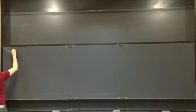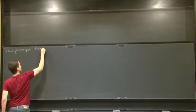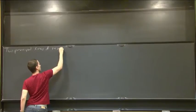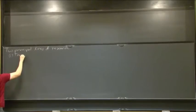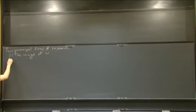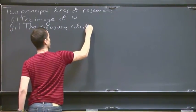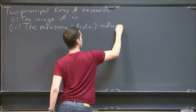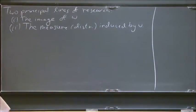There are two principal lines of research involving word maps. One is the image of the word map, and the second one is the measure induced by the word map, or the distribution induced by the word map. I will talk very briefly about the first one, and most of the talk will be about the second one.